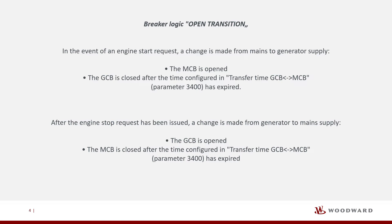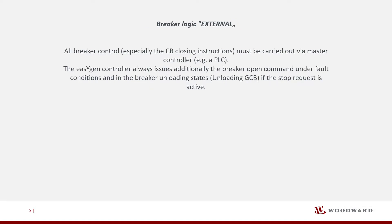Breaker logic open transition: in the event of an engine start request, a change is made from mains to generator supply. The MCB is opened. The GCB is closed after the time configured in transfer time GCB-MCB, parameter 3400, has expired. After the engine stop request has been issued, a change is made from generator to mains supply. The GCB is opened. The MCB is closed after the time configured in transfer time GCB-MCB, parameter 3400, has expired.